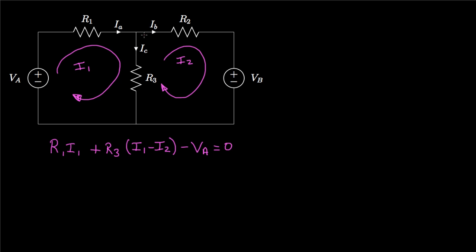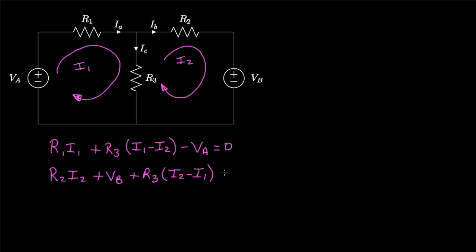Going around the second loop starting in its corner: the first drop is R2 times I2, then we hit the positive side of VB, then the drop across R3 with current flowing as I2 minus I1, giving R3 times (I2 minus I1). Setting that sum equal to zero completes the second equation.